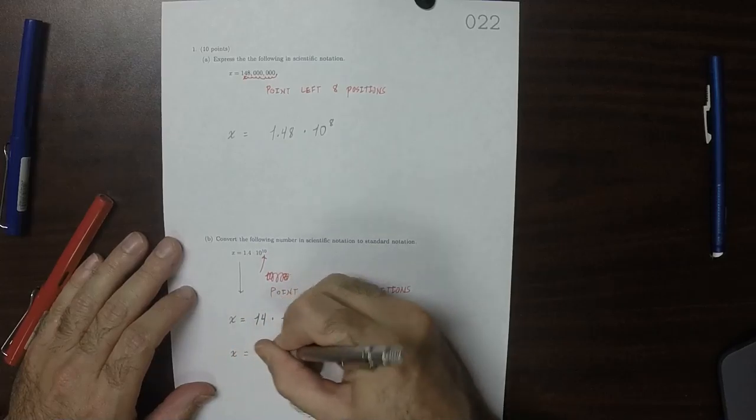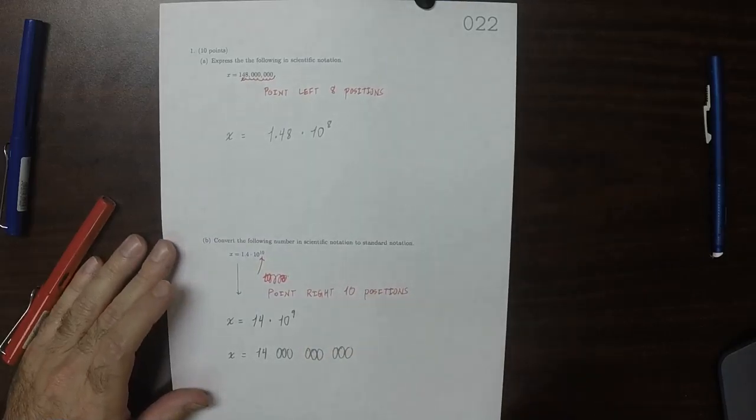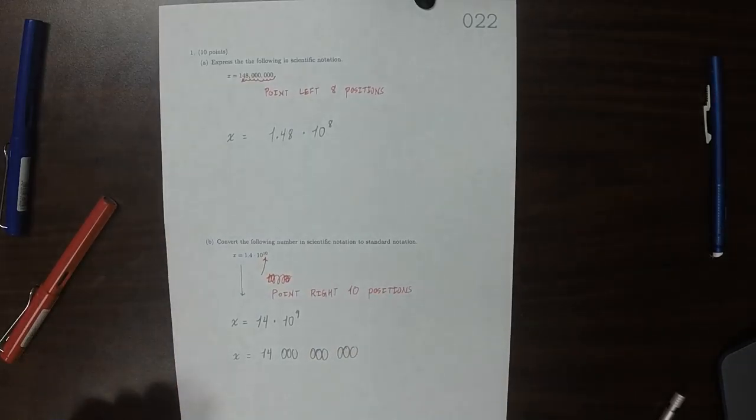So that would be 14 followed by 1, 2, 3, 4, 5, 6, 7, 8, 9 zeros. That's the answer.